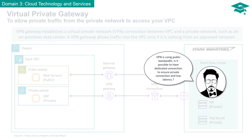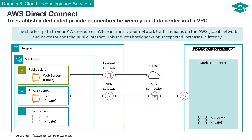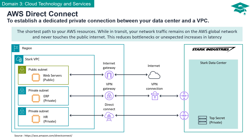VPN is using public bandwidth. Is it possible to have a dedicated connection to ensure a private connection and low latency? AWS Direct Connect is a powerful service that allows you to create a dedicated and private connection between your on-premises data center and your Amazon Virtual Private Cloud. This dedicated connection offers the shortest and most direct path to access your AWS resources. This network traffic travels exclusively on the AWS global network and avoids any contact with the public Internet, minimizing the risk of bottlenecks and ensuring consistent low latency performance, even during periods of high traffic.